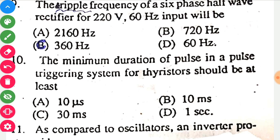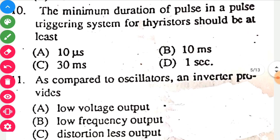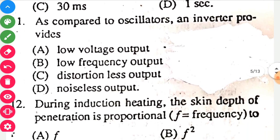The tenth question: the minimum duration of a pulse in a pulse triggering system for thyristors should be at least 10 microseconds, because the pulse needs to be for the minimum time possible, and 10 microseconds is the least time among the available options.